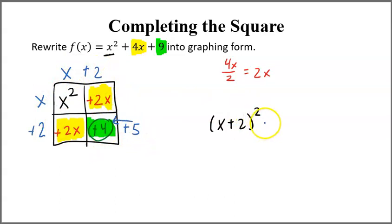So if I add five here to this square, I have to add five here to the expression. Because x plus 2 squared represents the whole area of this square, but it didn't give me enough tiles, so I had to add the tiles. So I get f(x) equals, and this is the graphing form equation of this original standard form equation.